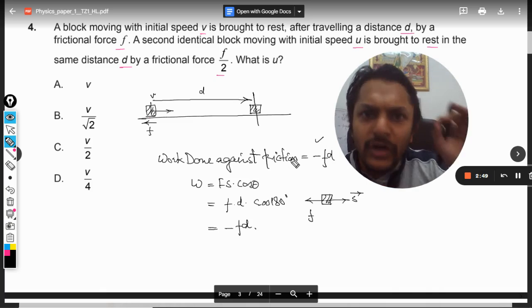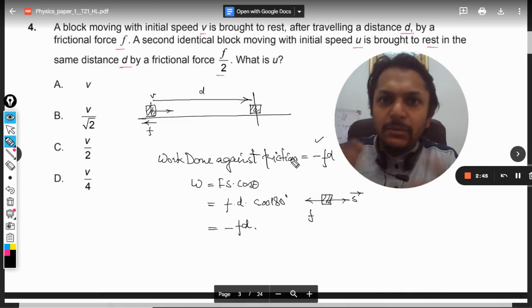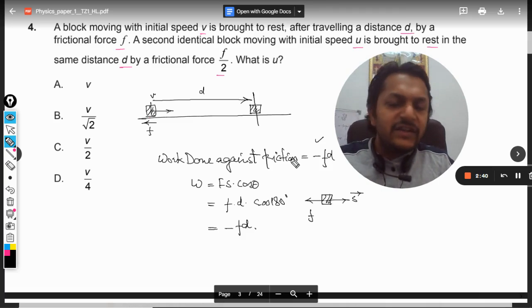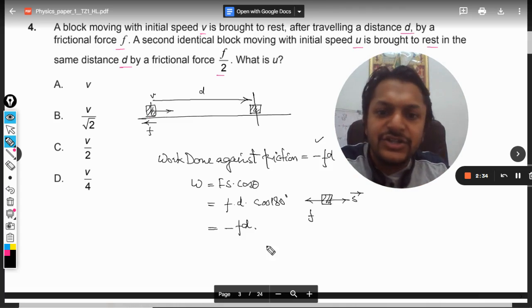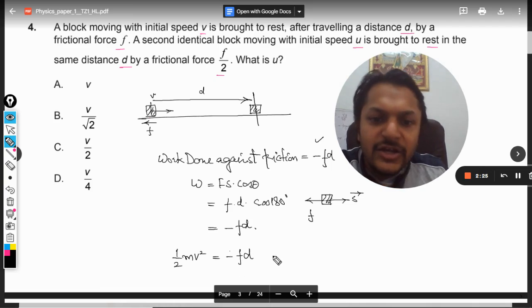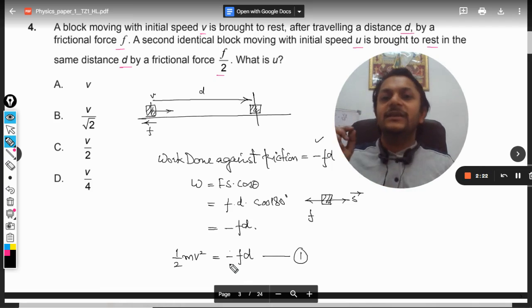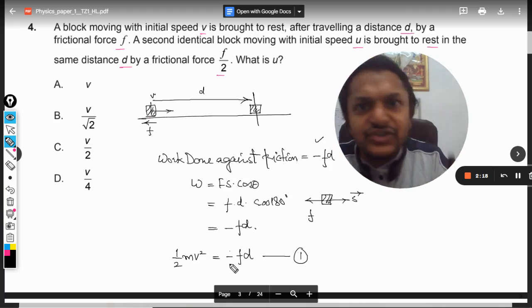So our work done here will become minus F into D. We can use the formula directly also: minus F into D. The work is done by the body, but from where is the energy coming? If work is done, there has to be loss of energy, so definitely there is energy which is lost and that is kinetic energy. So I can say that half MV² is lost in minus FD. This becomes our first case.